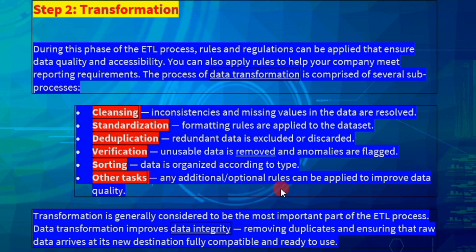Any additional optional rules can be applied to improve data quality. Mathematical calculations are part of this transformation process — we will multiply, subtract, and edit. We are going to change the business logic and modify it. This transformation step is very important.